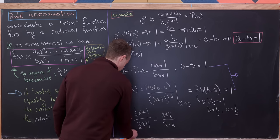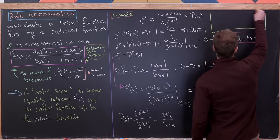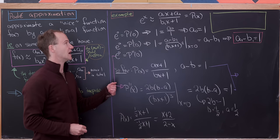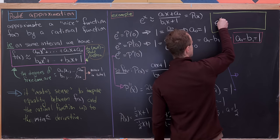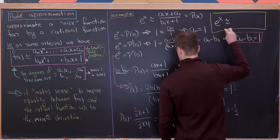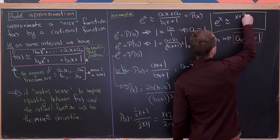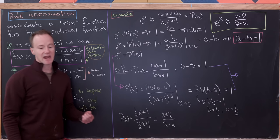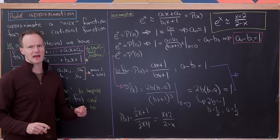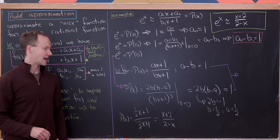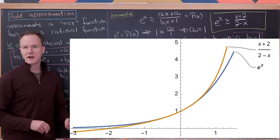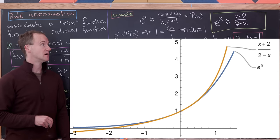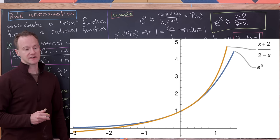So we have our (1,1) Padé approximant of e^x, which says e^x ≈ (x + 2)/(2 - x) on some interval containing zero. A graph of these two functions confirms they're pretty close on that interval.